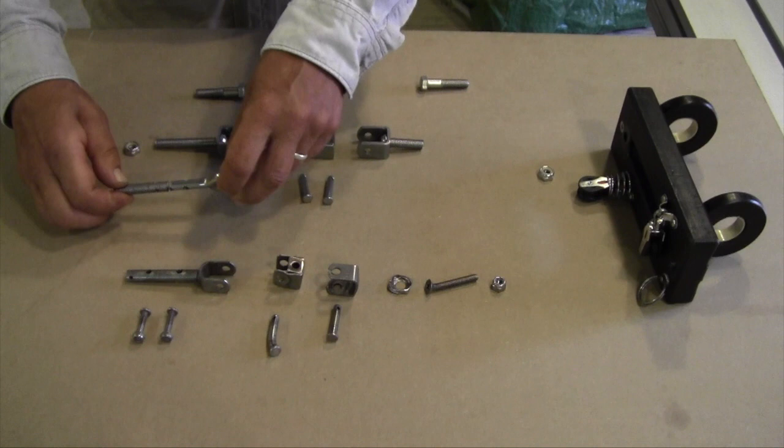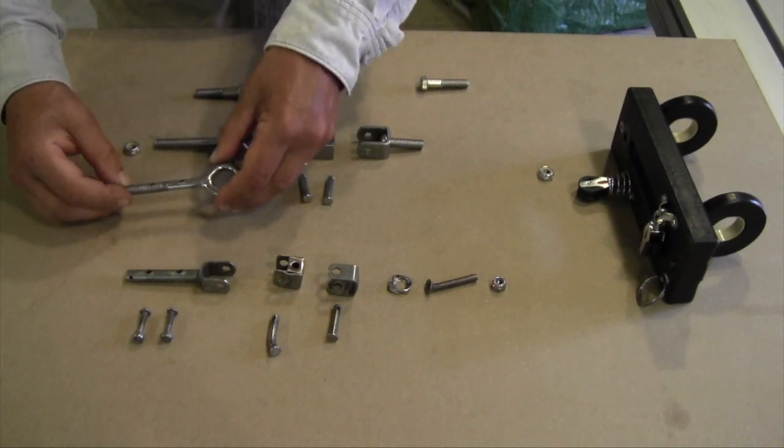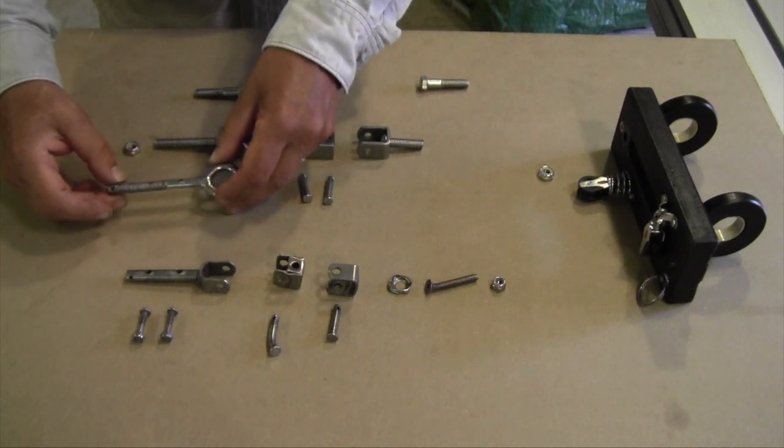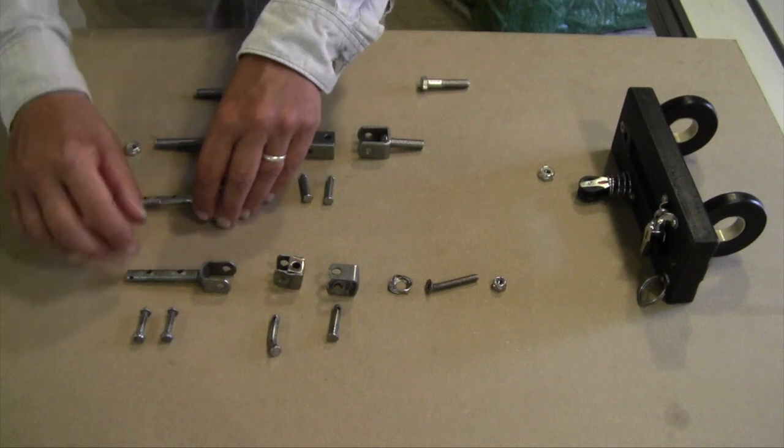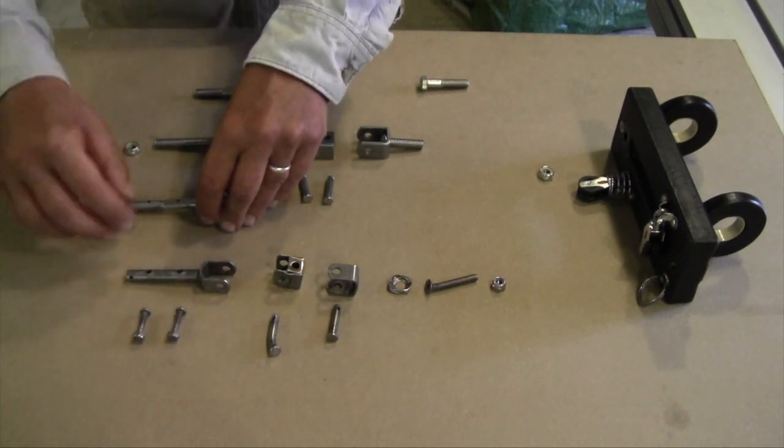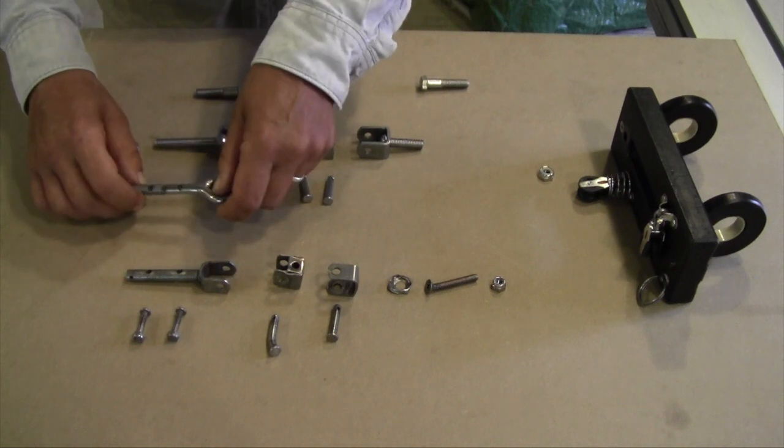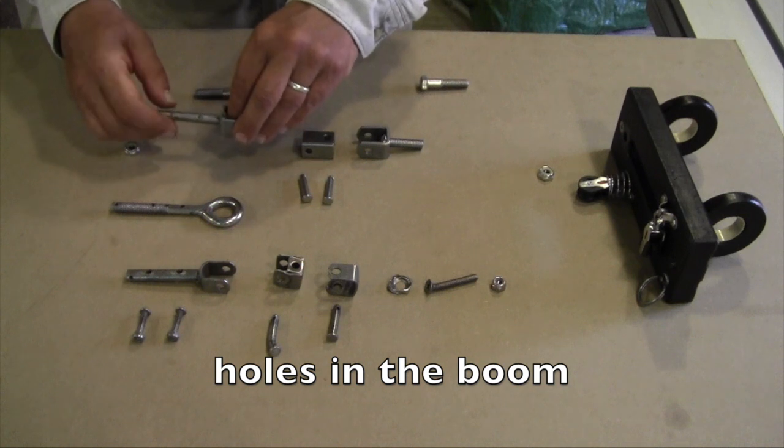So as you can see when I was practicing with the U-bolt here, I have several holes in there and none of them are really that well centered. And when I use this, really I could only get one of the two bolts to line up with the holes on the mast.